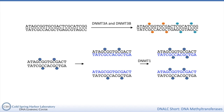Overall, DNMT3A and DNMT3B set up a pattern of methylation during development, and the pattern is changed when cells differentiate into different cell types. DNMT1 maintains those patterns, and DNMT3A and DNMT3B may also help out a bit with maintenance methylation. Then that cycle continues — DNMT3A and DNMT3B set up new patterns as needed, and DNMT1 maintains.